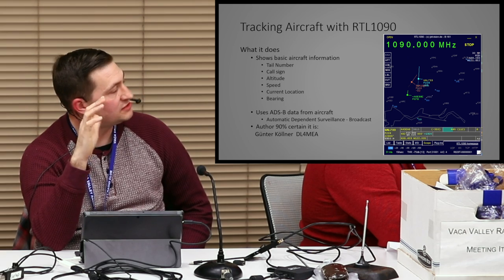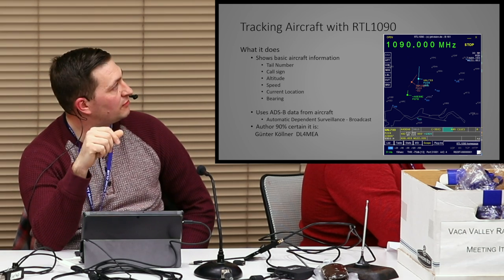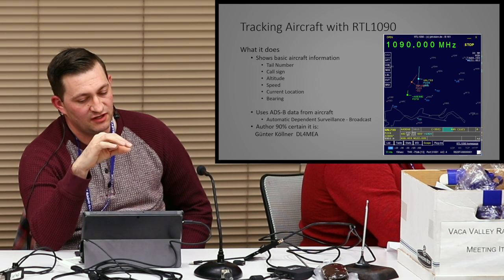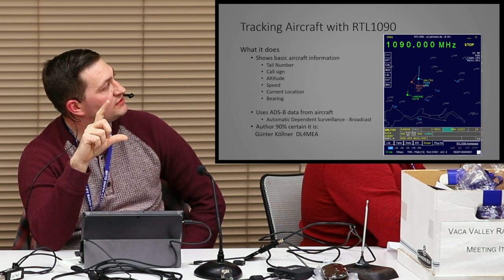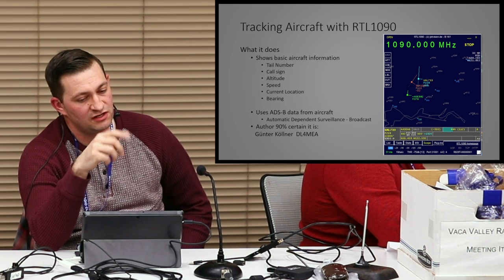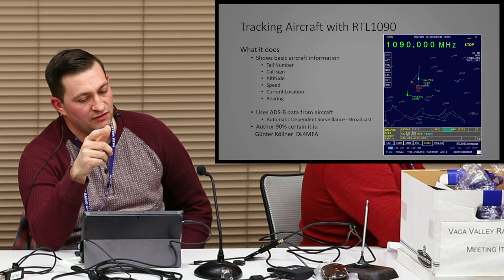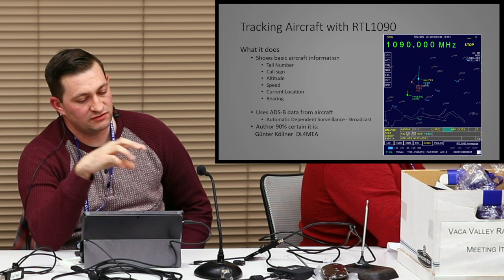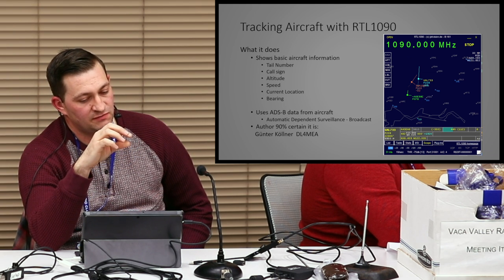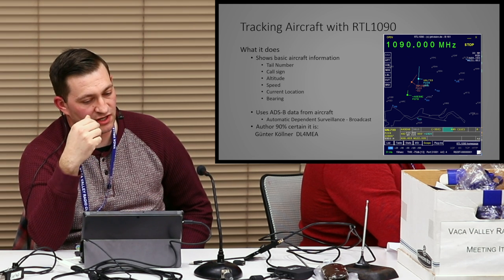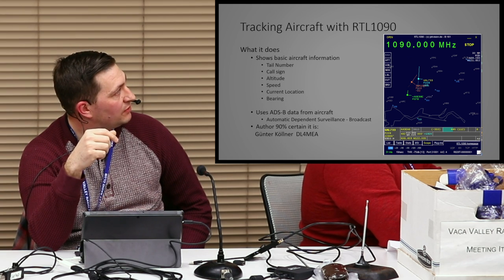This is the last piece of software I'm going to show you. It's not very pretty to look at, but it's useful information. This is RTL-1090. What it does is allow you to pick up transmissions from aircraft as they're flying over. That's called ADS-B — Automatic Dependent Surveillance Broadcast. It gives basic information like tail number, call sign, altitude, speed, location, and where it's going.